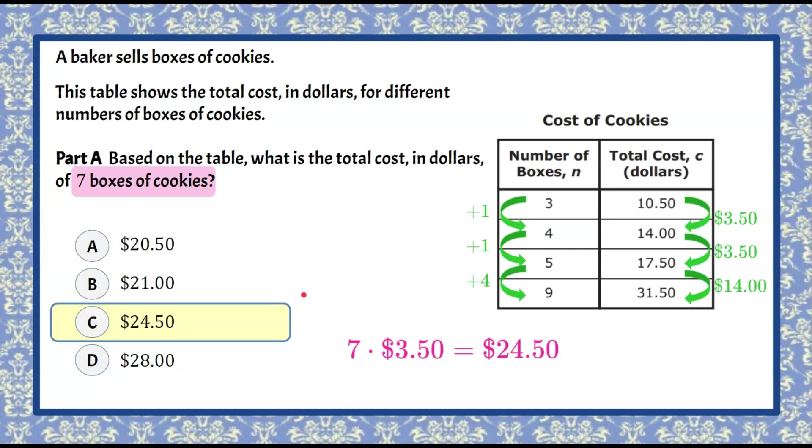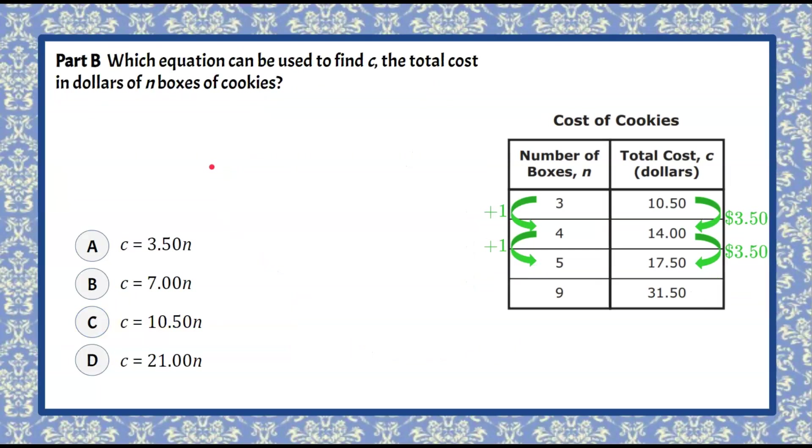Now let's do part B. Part B asks us which equation can be used to find C, the total cost in dollars of n boxes of cookies. So we still have our table of values, we have already found our unit rate or cost per box. I'm going to ask you to pause, determine which of these equations would be true and then come back and hit play.